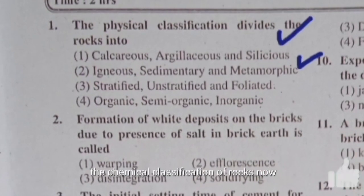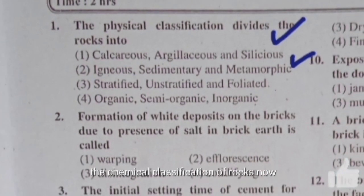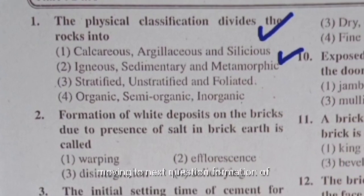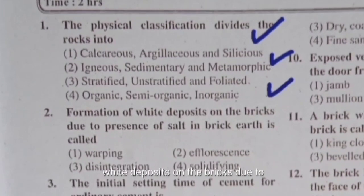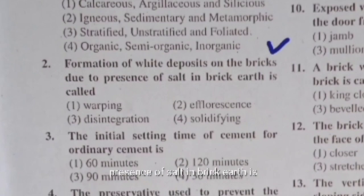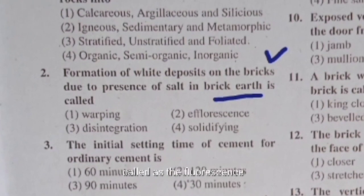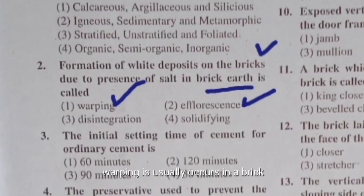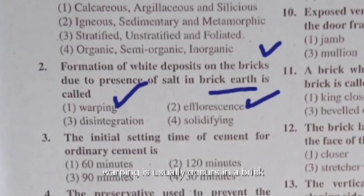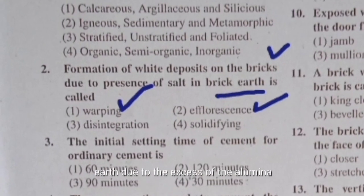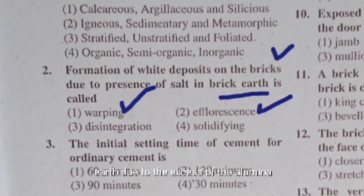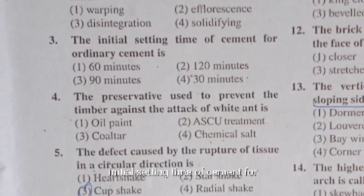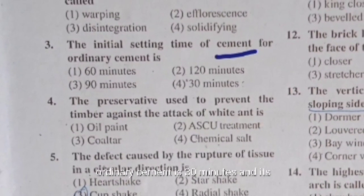The formation of white deposits on bricks due to the presence of salt in brick earth is called efflorescence. Warping usually occurs in brick earth due to excess of alumina.